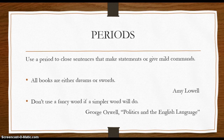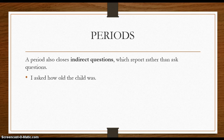A period also closes an indirect question. An indirect question reports rather than asks questions. Here's the example: "I asked how old the child was." It isn't a question — it's saying that there was a question asked. It's an indirect question, so it doesn't get ended with a question mark; it ends with a period.